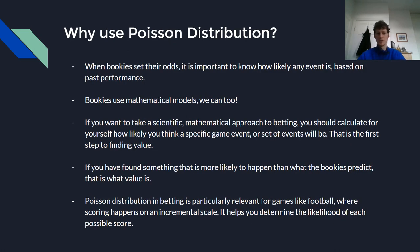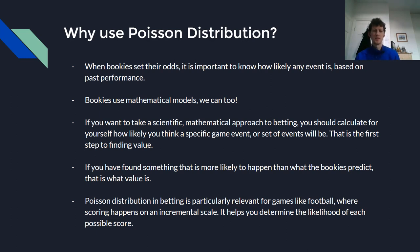So why use Poisson distribution? When bookmakers set their odds, it is important to know how likely any event is based on past performance. Bookmakers use mathematical models and we can too. If we want to have the optimal chance of competing and making a profit, then ideally you'd be using some sort of scientific mathematical approach. So if you want to take that approach, you should be calculating for yourself how likely you think a specific game or set of events will be. That is the first step to finding value.